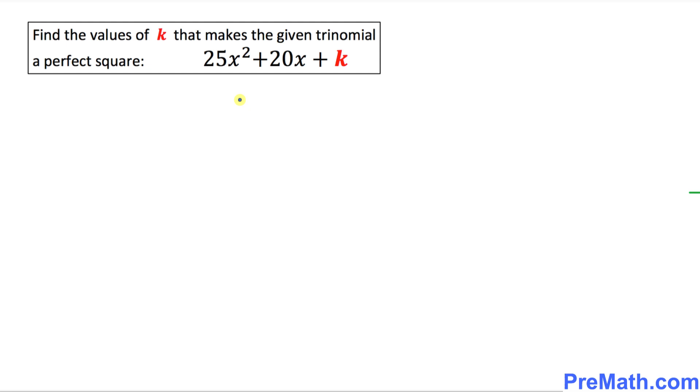And here is our next example. We are going to find the value of k for this given trinomial such that this becomes a perfect square. And we know that a perfect square trinomial will always have a discriminant b² - 4ac equal to 0.